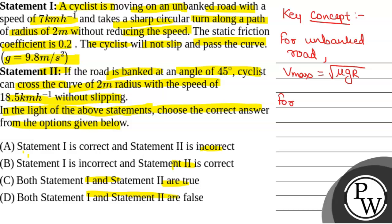And for banked road, the maximum safe velocity Vmax equals the square root of g r times tan theta plus mu divided by 1 minus mu tan theta, where theta is the angle of banking, mu is the coefficient of friction, g is the acceleration due to gravity, and r is the radius of the path.